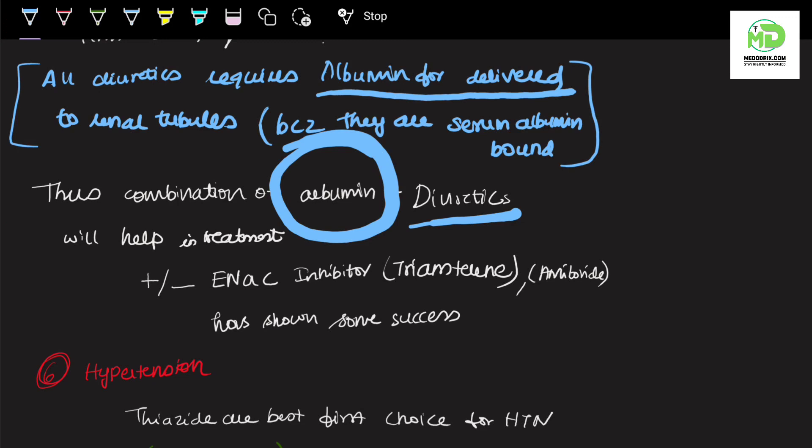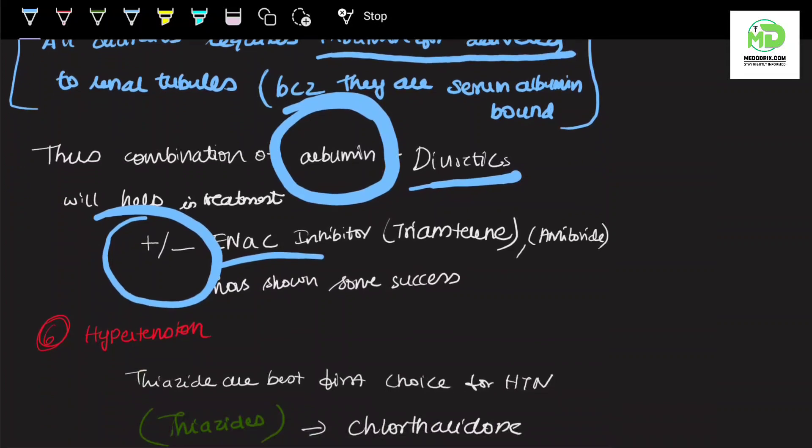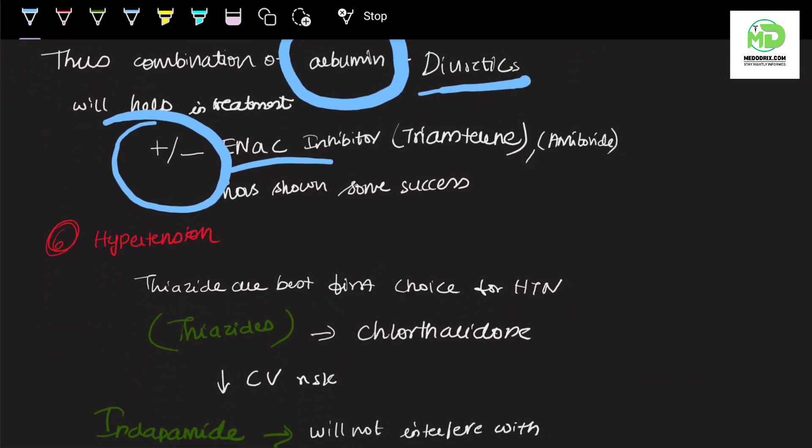We need albumin to carry it to the site of action. So a combination of albumin plus diuretics is always recommended in nephrotic syndrome, and this can be added with epithelial sodium channel inhibitor, example triamterene or amiloride.